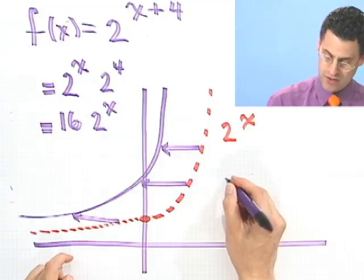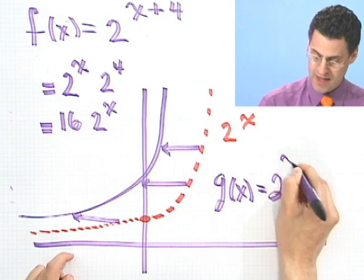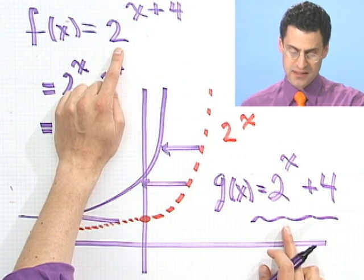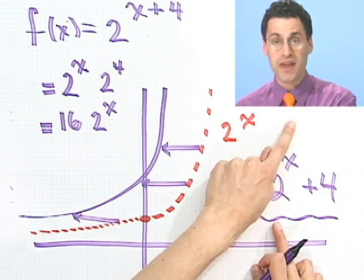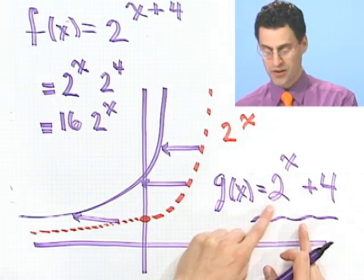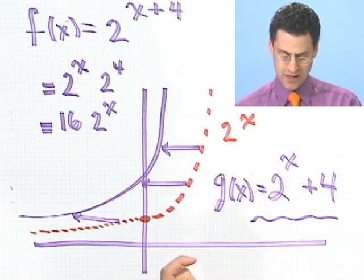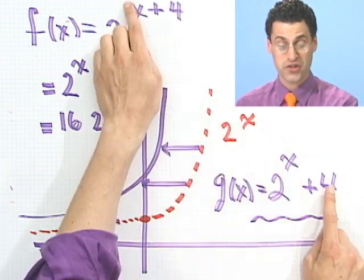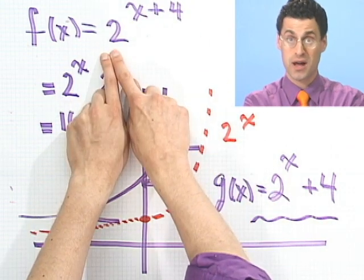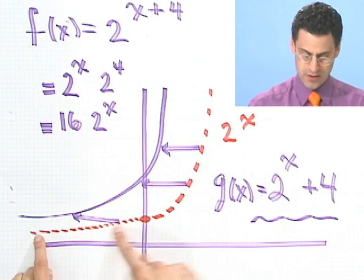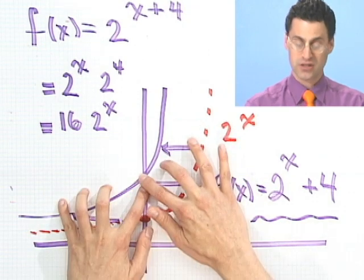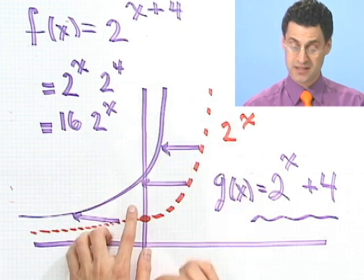Now I want to look at the next function, g of x equals 2 to the x plus 4. Notice that is dramatically different from f of x. The first was 2 to the power x plus 4; this is 2 to the x, plus 4 — you take the whole thing and add 4 to it. That's going to be a shifting of the y's, because you just take the answer from 2 to the x and add 4 to everything, whereas the first was a shifting of the x's. So here I start with 2 to the x and just raise it 4 units up — 1, 2, 3, 4 — and that picture looks dramatically different.